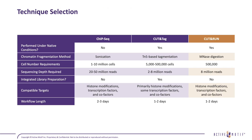Why would you use CUT&RUN over ChIP-seq or CUT&TAG? ChIP-seq requires higher sequencing depth and far more cells than CUT&RUN. CUT&RUN is also a simpler benchtop protocol than ChIP-seq and can be completed in as little as two days. Day one involves about an hour and a half of setup followed by an overnight incubation, and libraries can be ready by the end of day two.